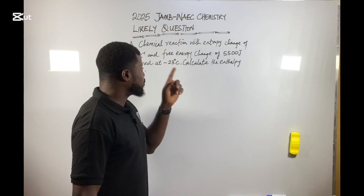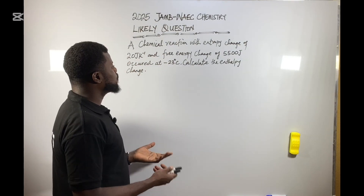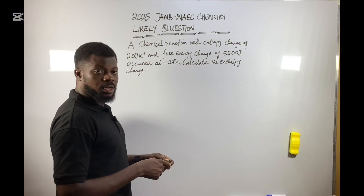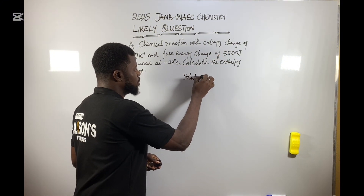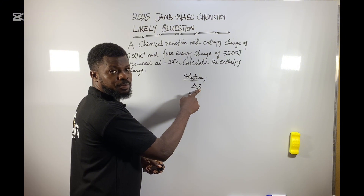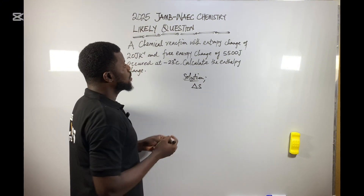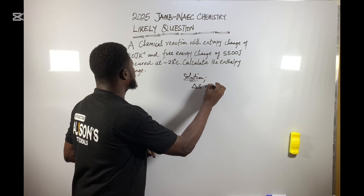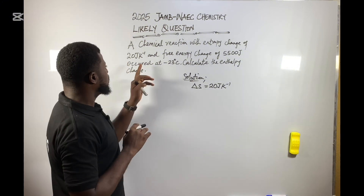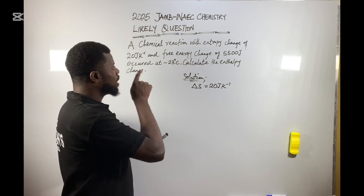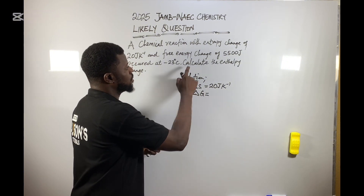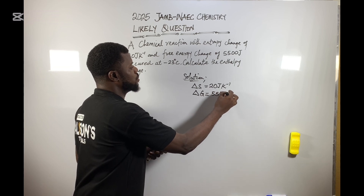This question involves a chemical reaction with entropy change. They say entropy change — S represents entropy change, and they give us 20 joules per kelvin. Then free energy change — delta G represents free energy. The symbol for free energy change is given as 5500.